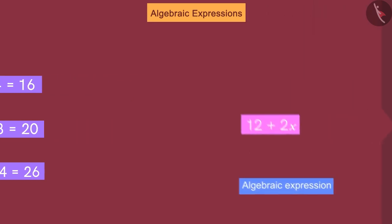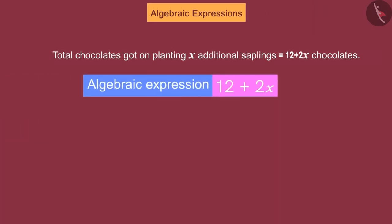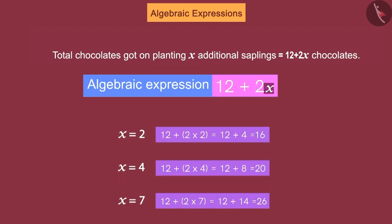So now, this expression makes it easy to find the number of chocolates that Raghu got. We have to place the number of additional saplings planted by Raghu in place of x. On the basis of the value of the variable x, the value of the expression will change.